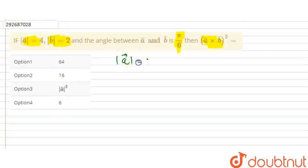The magnitude of vector a is 4, the magnitude of vector b is 2, and the angle is π/6. So we have to find the value of (a⃗ × b⃗)². First, let's find a⃗ × b⃗. What is our formula? |a⃗| times |b⃗| times sin θ, where θ is the angle between a and b.